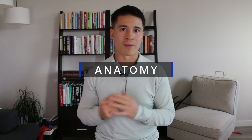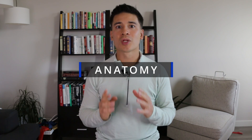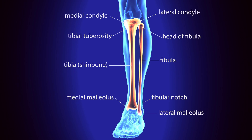First, let's start off with a little bit of anatomy so that we're all on the same page. When we look at the bones of the lower leg, we have the tibia and the fibula. The tibia is the bigger bone on the inside, whereas the fibula is the smaller bone on the outside.